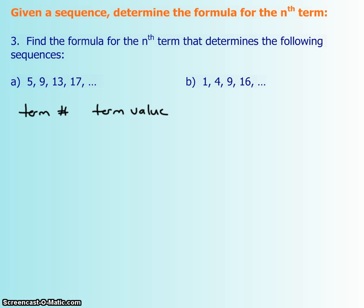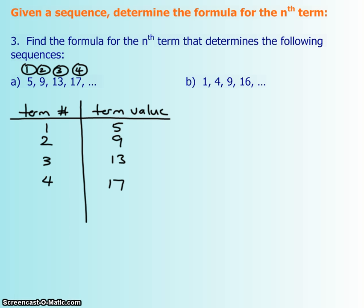You don't always have to do it this way. If you know right off the bat how to do it, then that's fine. But I find that this way kind of organizes my thoughts. So, the first term, term number 1, gives you a term value of 5. The second term, term number 2, gives you a value of 9. And third and fourth, 3, 4, is 13 and 17.